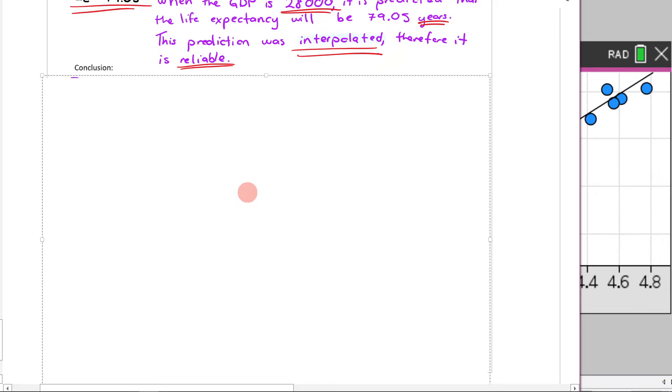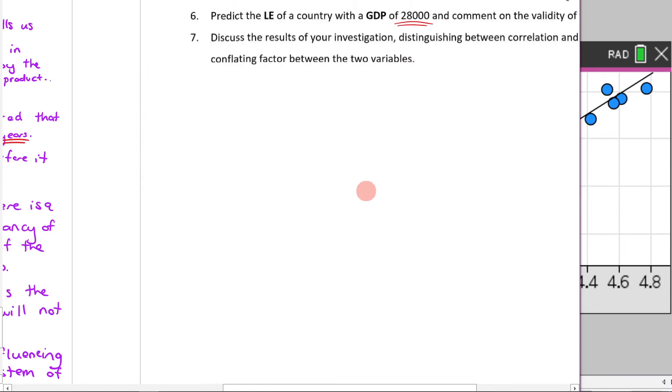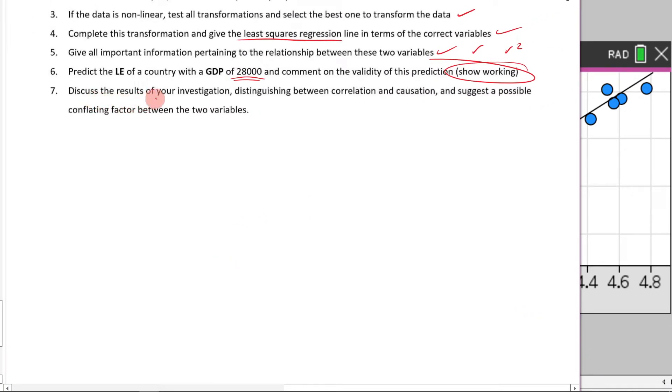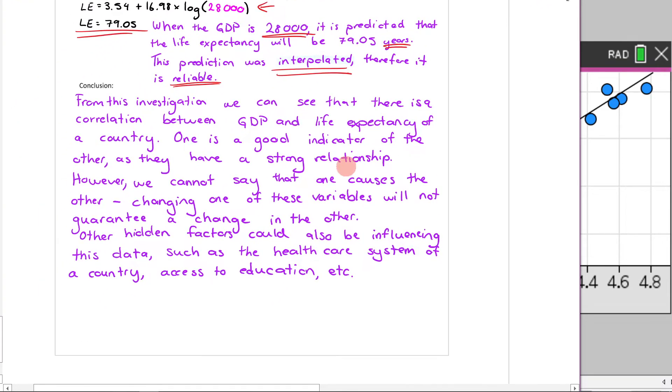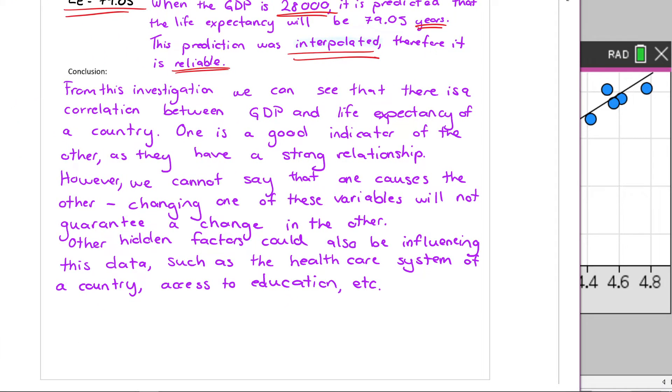Conclusion now. Now quite a bit here to include in the conclusion. It says that we need to do the following. Discuss the results of your investigation, distinguishing between correlation and causation, and suggest a possible conflating factor between the two variables. So here it is. From this investigation, we can see that there is a correlation between GDP and life expectancy of a country. One is a good indicator of the other, as they have a strong relationship. However, we cannot say that one causes the other. Changing one of these variables will not guarantee a change in the other. So here we're bringing into the discussion that correlation does not equal causation.